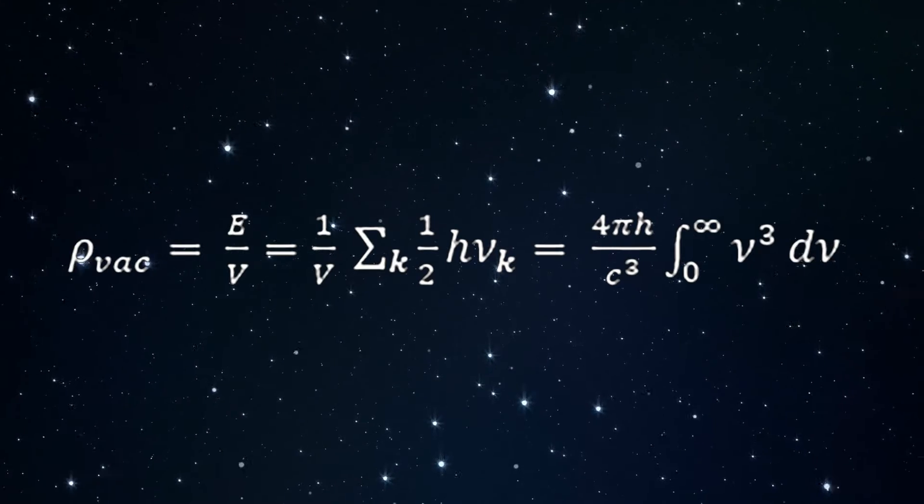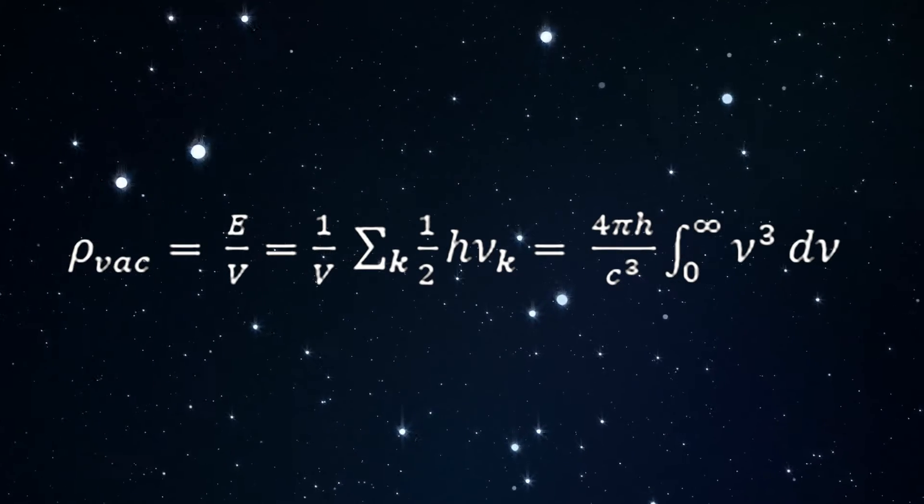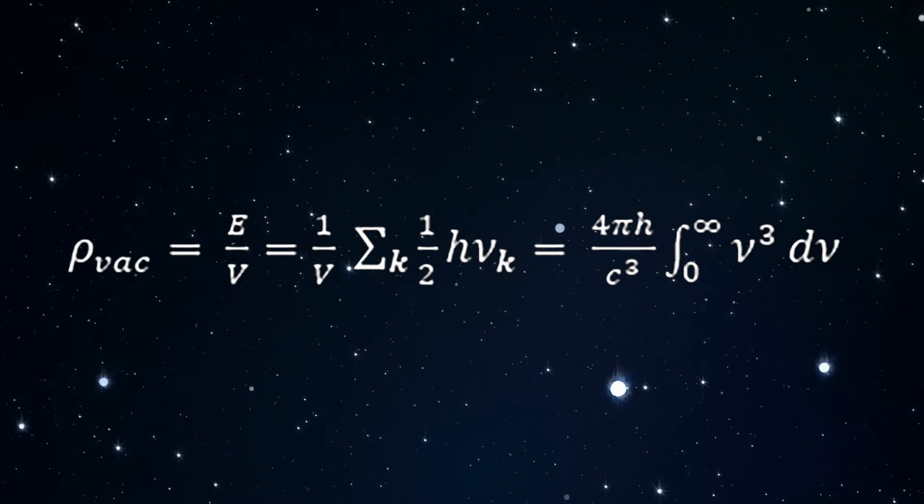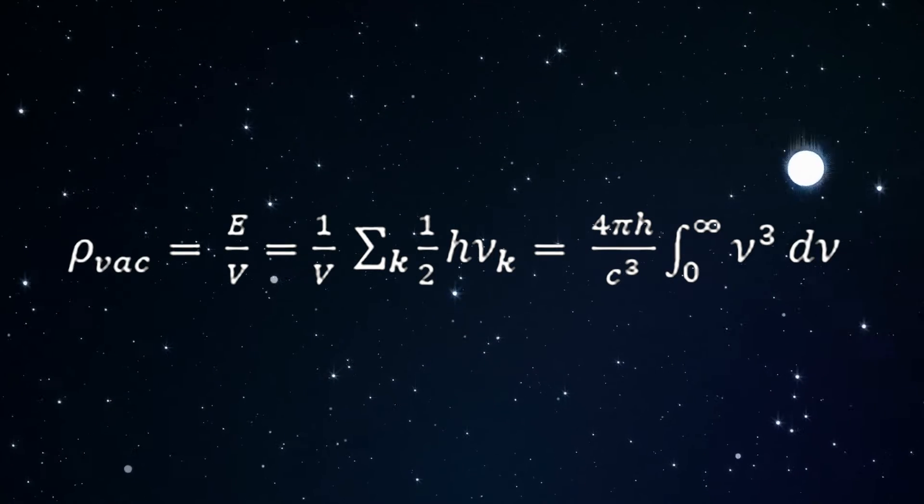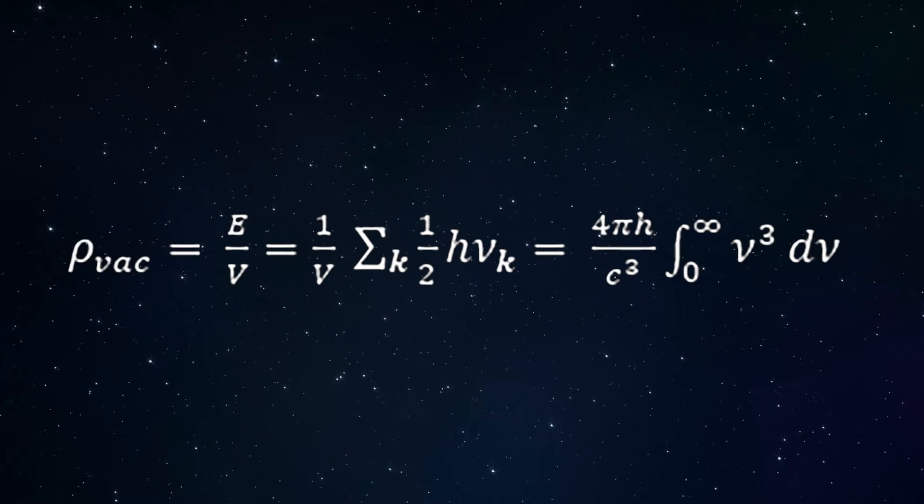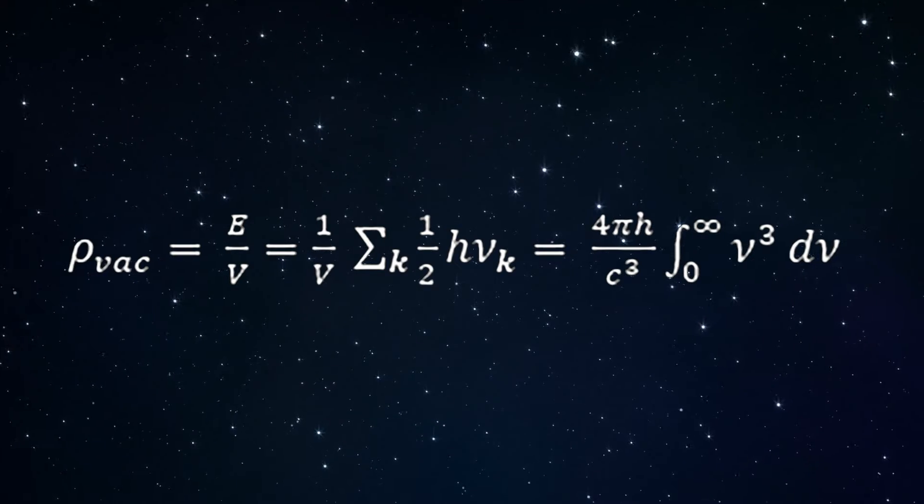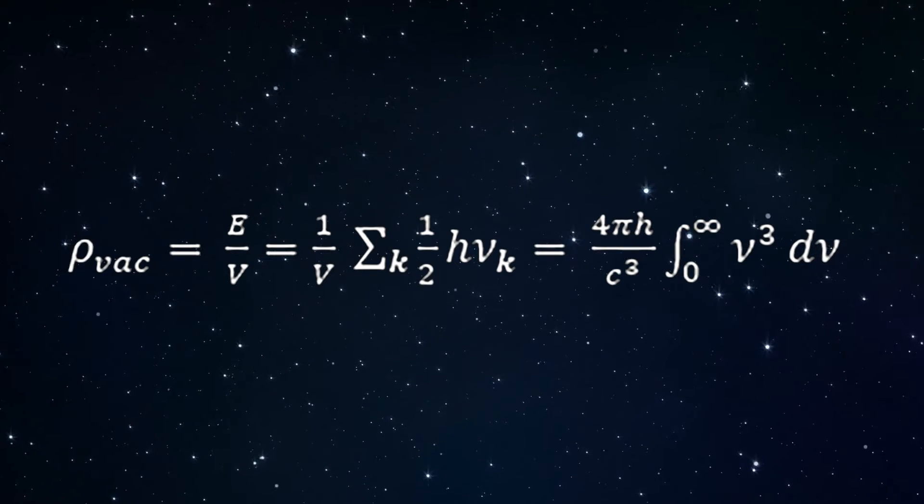This leads to the energy density equation shown here. The wave vector k signifies the normal modes of the electromagnetic field that are consistent with the boundary conditions on the quantization volume v. As v approaches infinity, one obtains the right-hand side of the equation.